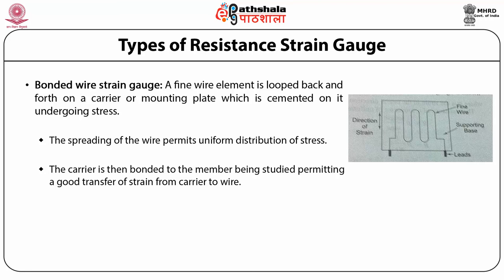The semiconductor strain gauge depends upon the piezo-resistive effect — that is, a change in the value of resistance due to a change in resistivity. Semiconductor materials such as germanium and silicon are used as the resistive materials. It consists of a strain material and leads placed in a protective box, with gold leads used for making contacts. Advantages: they have a very high gauge factor allowing measurement of very small strain, excellent hysteresis characteristics and are very small in size. Disadvantages: they are sensitive to temperature changes, linearity is poor and they are much more expensive.